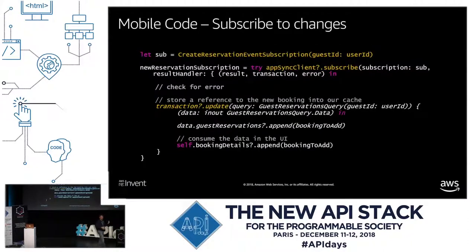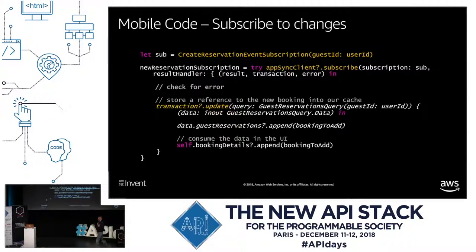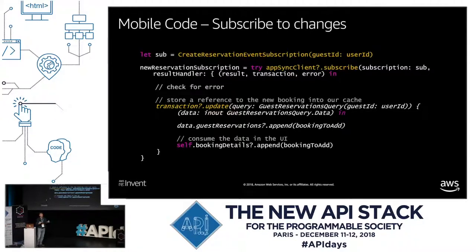How do you do that at code level? In iOS Swift — very similar in Kotlin, Java, or JavaScript — you create a reservation event subscription object passing the current authenticated user's guest ID. You create a subscription by calling the AppSync client and subscribing to that specific subscription, passing a callback function called when something happens, with result and error parameters. When your function is called back, you first check for errors, then update the local cache — remember AppSync has a local cache, so if something happens on the server it's good to update the cache so subsequent queries fetch from there. Once the cache is updated, you display the data on the user interface.